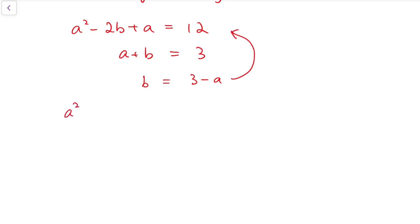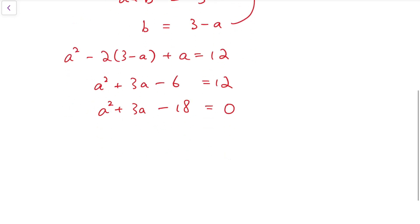And so we have a² - 2(3 - a) + a = 12. And simplifying, we have a quadratic equation about a, and we can solve for a.